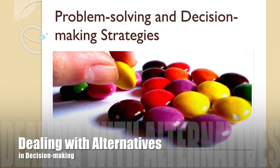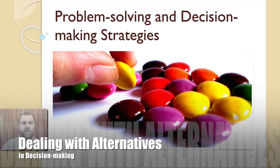Many decision-making models that exist nowadays mean that you have to make a decision as to which one of the available options to use. There are rational models, intuitive models, rational iterative models, as well as five, six, seven and even nine step decision-making models. Most, however, move through each of the basic stages in decision-making.